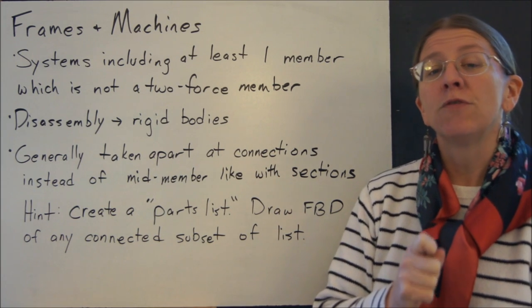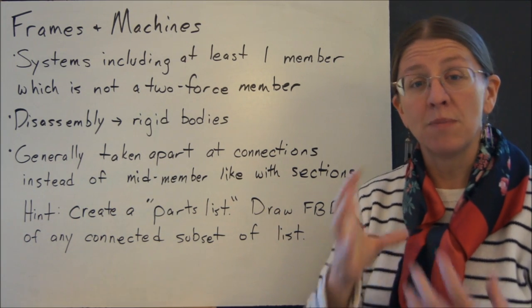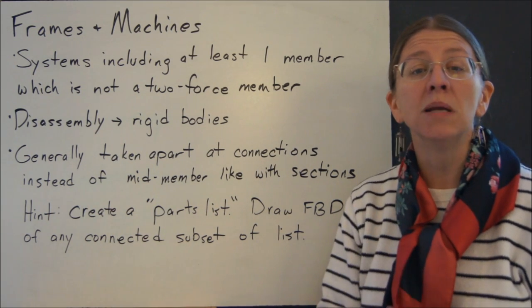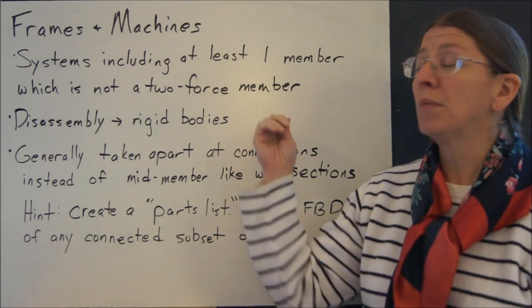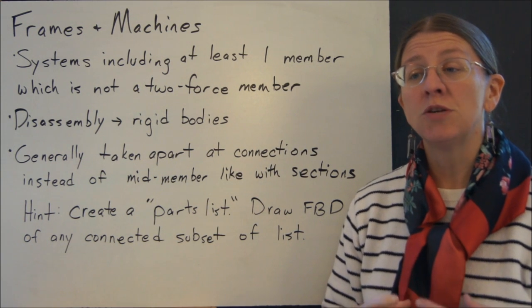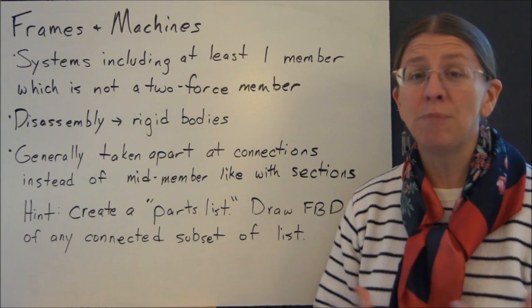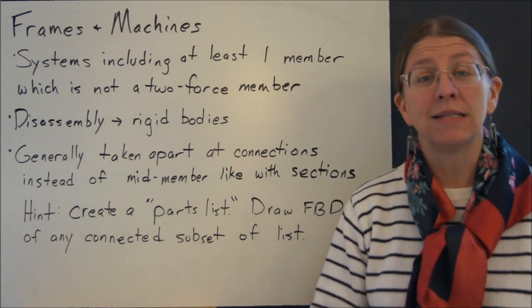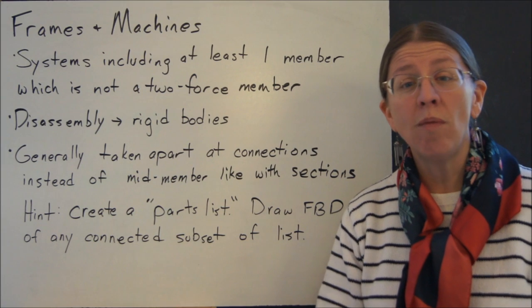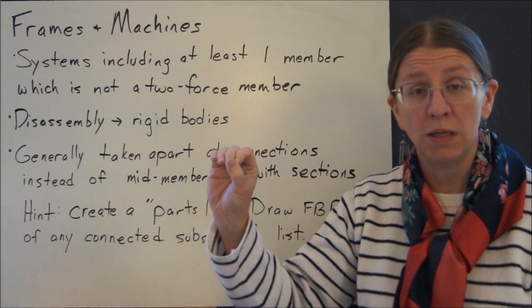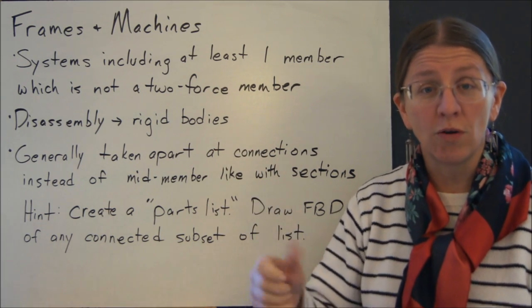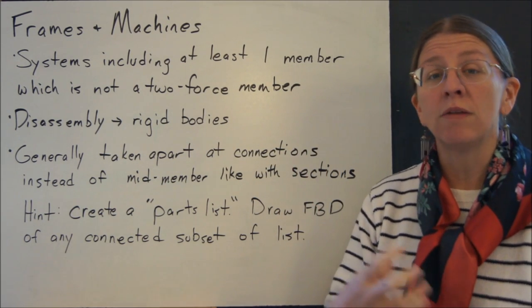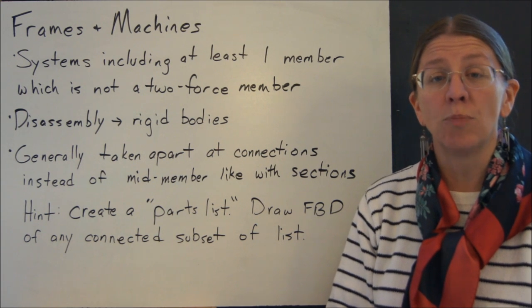Generally, one other difference between the method of sections and frames and machines is that with method of sections we're going to cut through the middle of a member. In general, when we're looking at frames and machines, what we're going to do is take things apart, like a bicycle, at the place where somebody put them together. So if I handed you a wrench and said take this bicycle apart, you probably wouldn't start by cutting through the metal tube. You'd take it apart where there are screws. So that's sort of what we're going to do with frames and machines. We're going to look at where the parts of the object are put together.